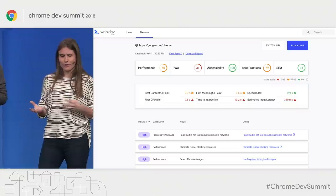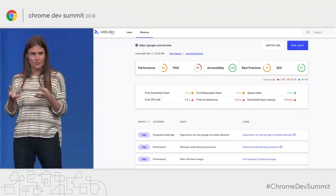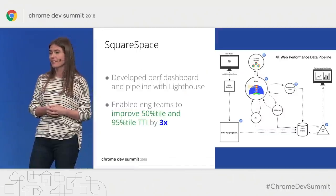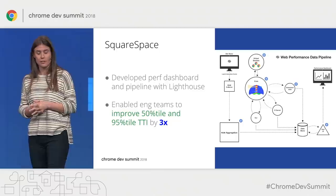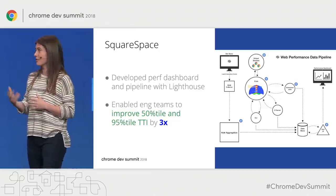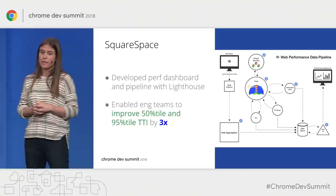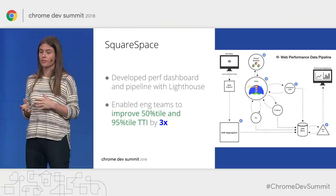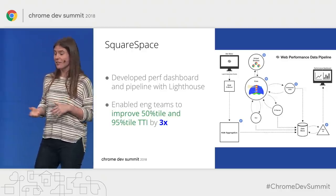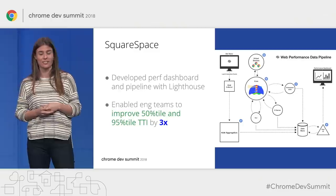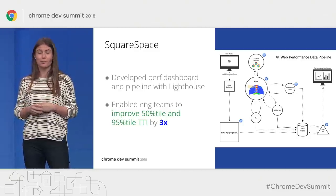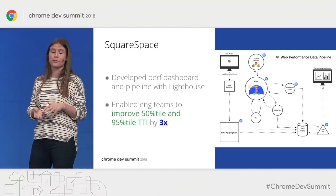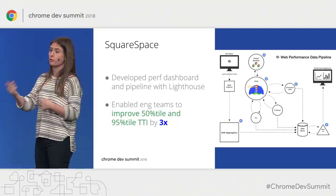What's so exciting about this is that for the first time, tooling is directly integrated with the documentation. We also want to call out Squarespace as a wonderful partner who has done a good job of using Lighthouse. They were able to use Lighthouse as an out-of-the-box auditing and reporting system to build on top of, and it allowed them to improve their 50th percentile and 95th percentile TTI by over three times. They used it to generate traces and dig deep into specific problems as they happened, as opposed to post-regression.